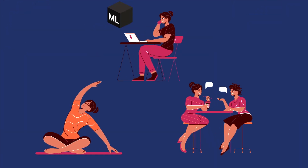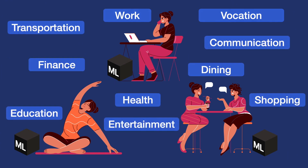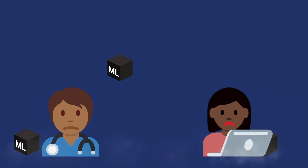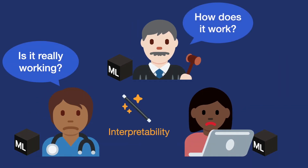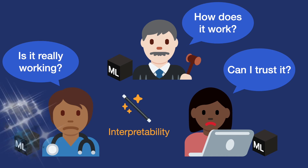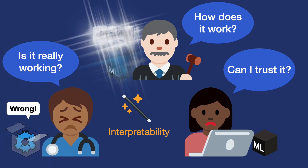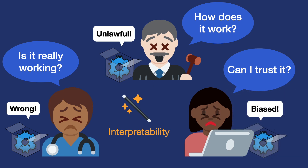As machine learning powered systems have been integrated into our everyday life, we began to require these intelligent models used for high-stake decisions such as healthcare, finance, and criminal justice to be able to explain their decision-making process. However, machine learning interpretability techniques reveal that many accurate models have learned some problematic and dangerous patterns from the training data.